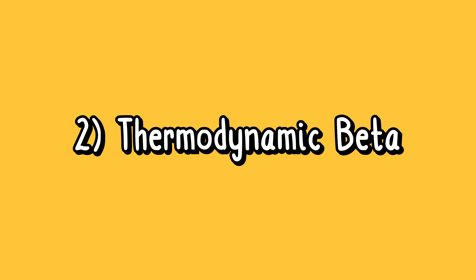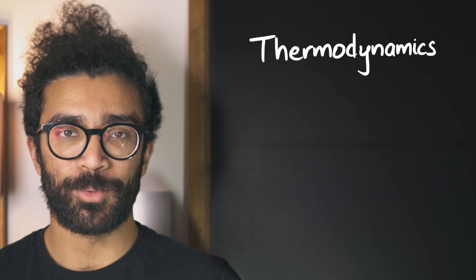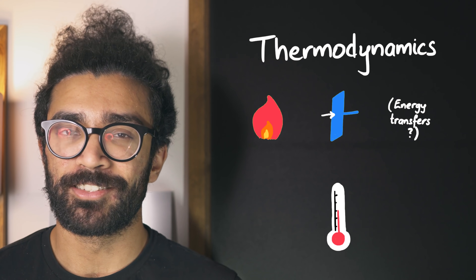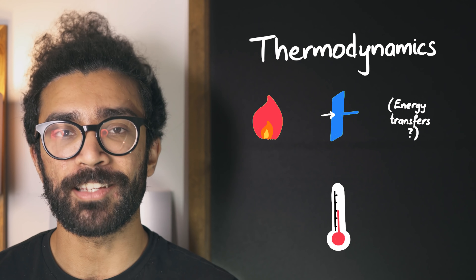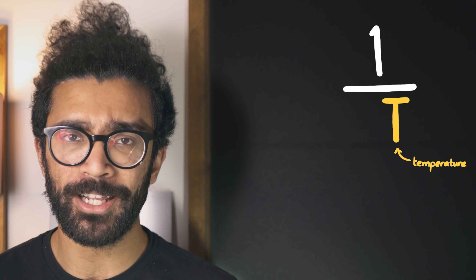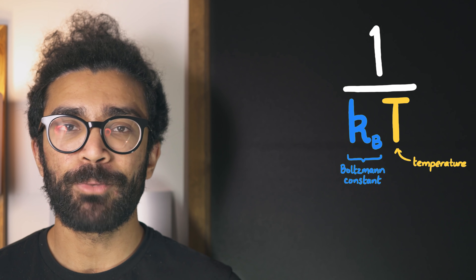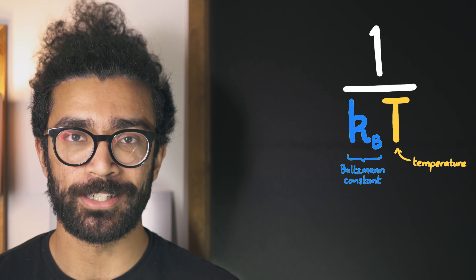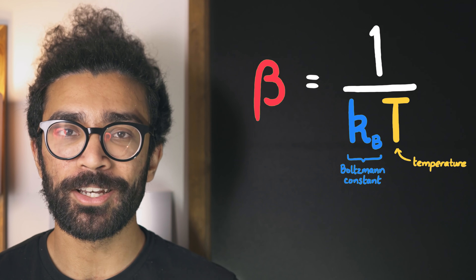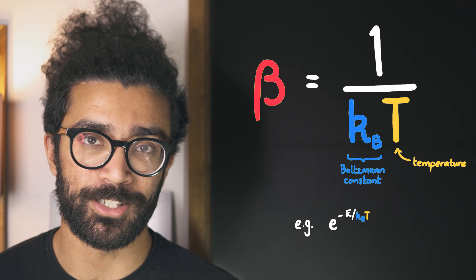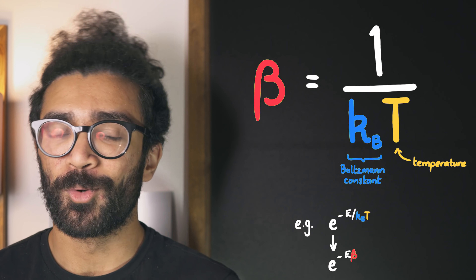Now the second thing I want to discuss here is a concept used for mathematical convenience in an area of physics known as thermodynamics — the area that deals with heat and work and energy transfers and quite often temperature. Now in many calculations that we end up doing when studying thermodynamics, we often see a factor of 1 divided by the temperature of our system T. In fact, we commonly see a factor of 1 divided by kb multiplied by T, where kb is known as the Boltzmann constant. For this reason, it becomes very useful to define a completely new quantity, often labeled beta, which is equal to 1 divided by kbT. Basically this way in our mathematics, we don't have to keep writing 1 divided by kbT all the time — we can just replace it with beta.